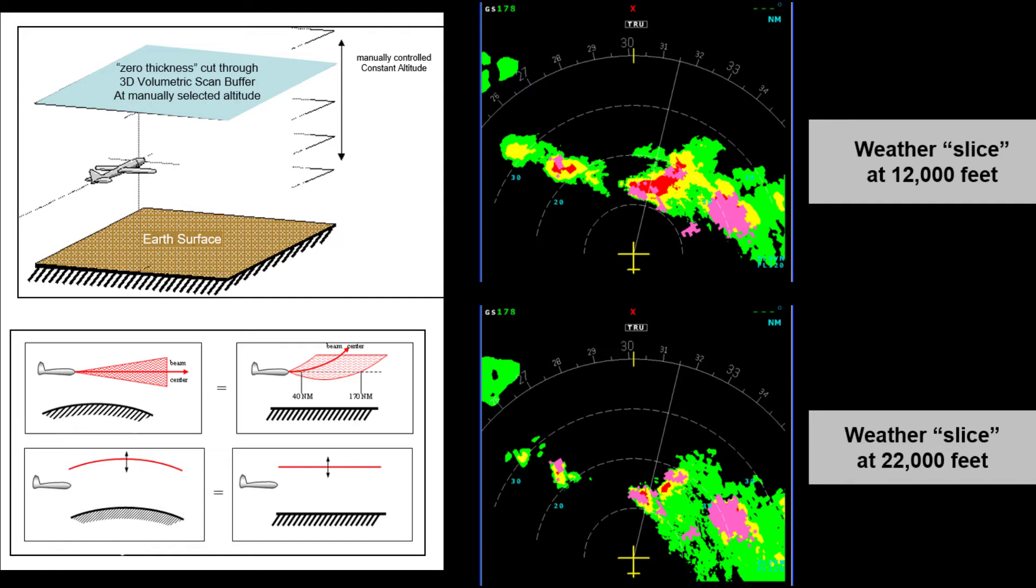For slices below ground level, nothing is shown. On some installations, turbulence can also be overlaid on top of the reflectivity data, providing additional information.